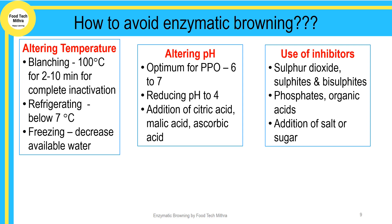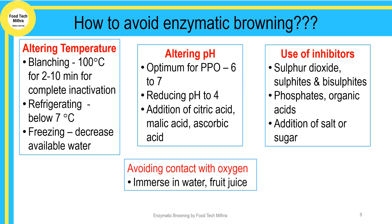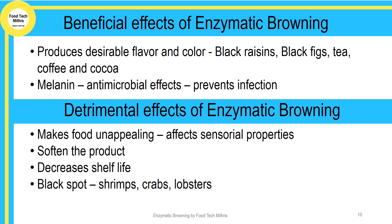The most simple solution to avoid enzymatic browning is the addition of sugars and salt to the cut product, which will retard the browning. Another method is avoiding contact with oxygen — in order to do this, the product can be immersed in water or any fruit juice, depending on the product.